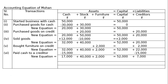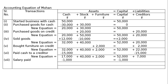Seventh transaction: paid salary. Salary is an expenditure that reduces both cash and capital. Salary paid: minus 1,000 from cash and minus 1,000 from capital. New equation: cash 16,000, stock 40,000, furniture 2,000 equals 58,000. Capital 51,000 plus creditors 7,000 also equals 58,000. This is the final answer.